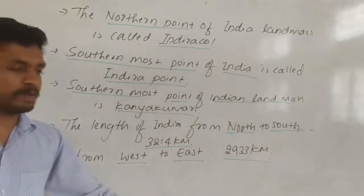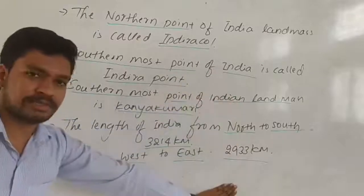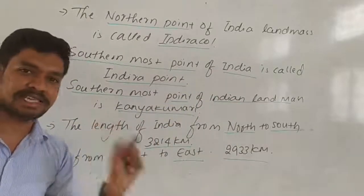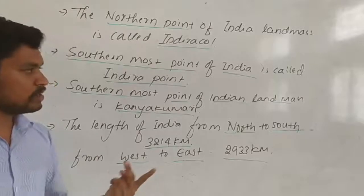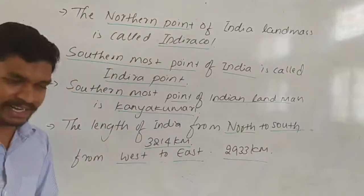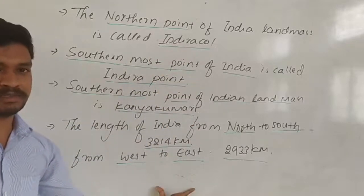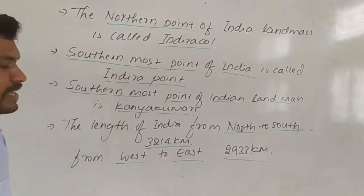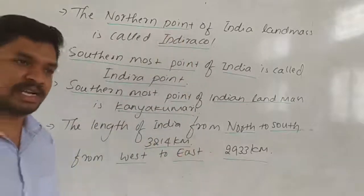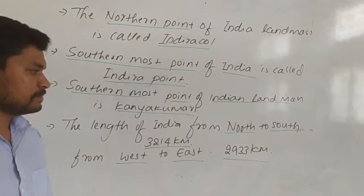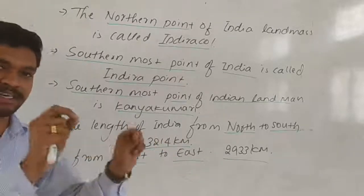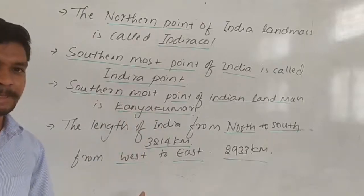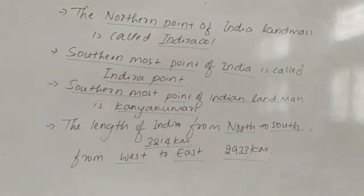When you explain about the size of India, you need to add these four more points. The size and the location — you can add these two points. You must add these two points — the kilometer distances — in the size topic. So, is that clear?